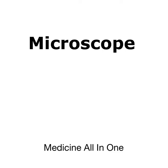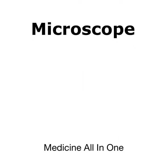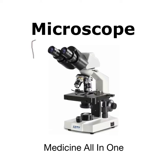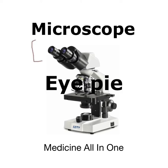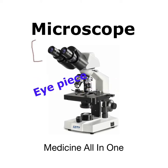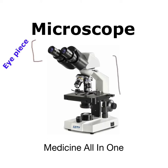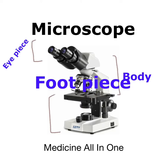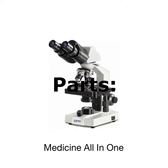A microscope is an instrument by which we can see small objects in detail which cannot be seen by the naked eye. A microscope basically consists of three parts: the first one is the eyepiece, that contains the ocular lens; the second one is the body piece, that includes the part between the foot piece and eyepiece; and the third one is the foot piece, that forms the base of the microscope and provides stability.